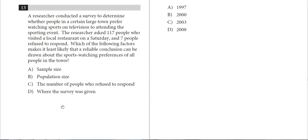Number 13, a researcher conducted a survey to determine whether people in a large town prefer watching sports on TV to attending the event. The researcher asked 117 people who visited a local restaurant on a Saturday, and seven people refused to respond. Which of the following factors makes it least likely that a reliable conclusion can be drawn?